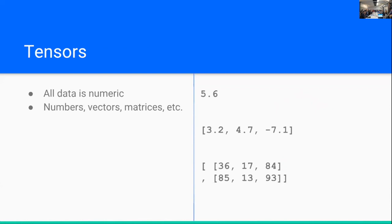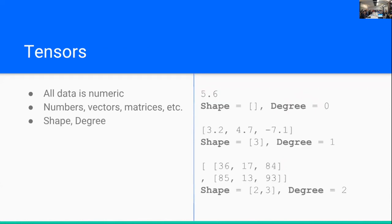An important thing to know about tensors for the rest of this talk is that every tensor has a shape and a degree. So the shape is essentially a list of the dimensions of our tensor. A single number is going to have an empty list as a shape, a vector is just going to have a singleton list of the number of elements, matrix will have a shape of length of two, and so on. The degree is just the length of our shape.